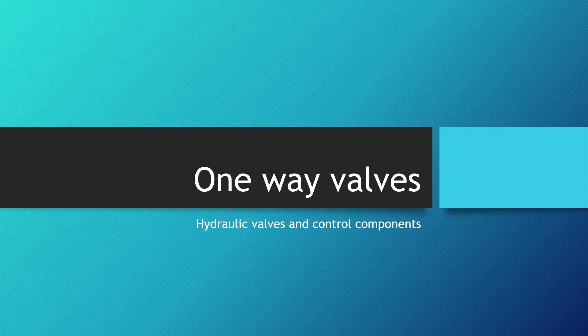Welcome to lesson 57 in hydraulics 102 and lesson 6 in the section on hydraulic valves and control components. In this lesson we will be learning about one-way valves, or as they are also called, check valves.